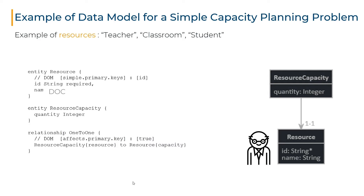This is a recurring pattern which describes the simple attributes without the relationships at the top of the file, and then describes the relationships between entities at the bottom of the file. Looking at the relationship definition, the resource capacity entity has a resource attribute which will point to a resource instance, and similarly we have a capacity attribute on the resource entity which will point back to the resource capacity instance. With those three declarations, the resource entity has three attributes: an ID, a name, and a capacity. The resource capacity entity has two attributes: a quantity and a resource.